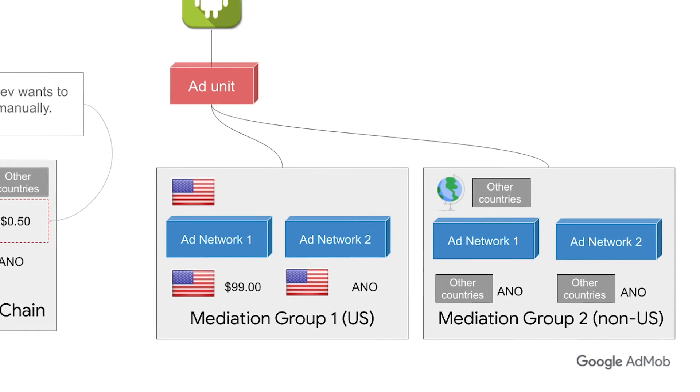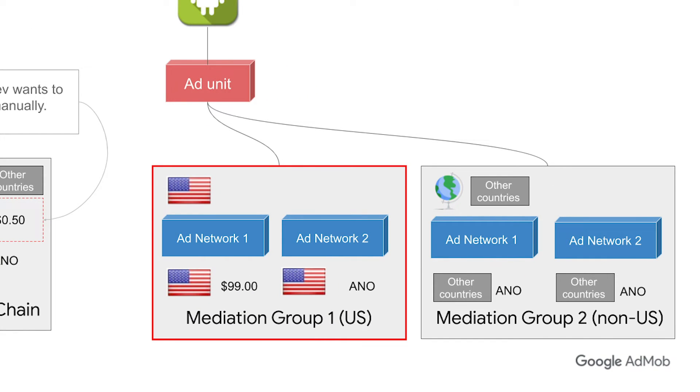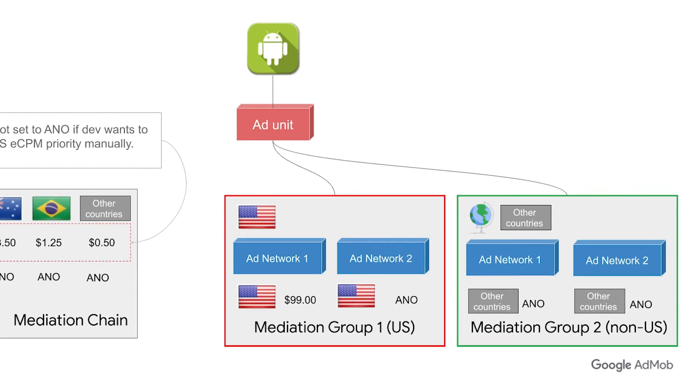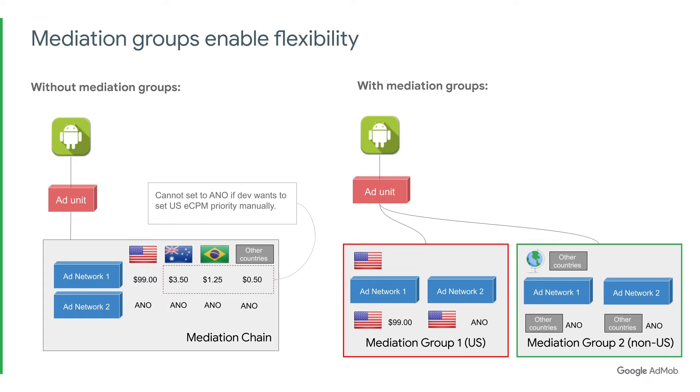For example, you can set up Network 1 to always get a first look in the US while keeping everything else ANO enabled. Not only is this a one-time setup, you can also apply this setup to multiple ad units across multiple apps. Now that you understand how Mediation groups, ANO, and Real-Time CPM can help you with mediation, let's take a look at a step-by-step UI walkthrough of how to create a Mediation group.